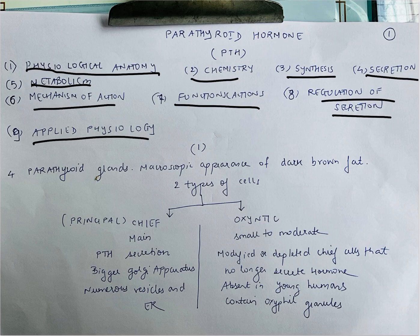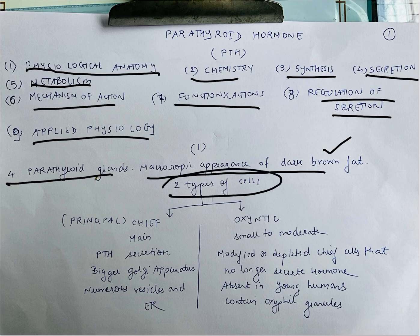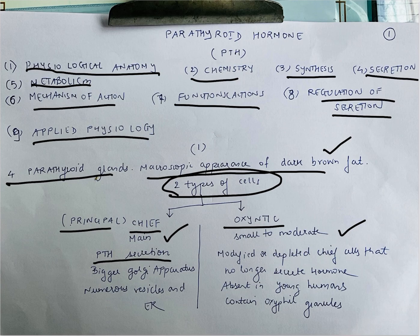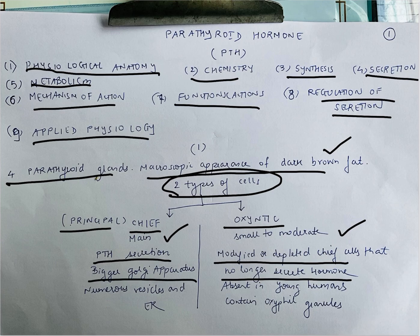Let's start with physiological anatomy. You have four parathyroid glands. The macroscopic appearance is of dark brown fat. It has two types of cells: principal or chief cells and auxinitic cells. The principal cells are the main cells and are responsible for PTH secretion. The auxinitic cells are modified or depleted cells that no longer secrete hormone. They are absent in young humans and contain oxyphyl granules. The principal cells have a bigger Golgi apparatus with numerous vesicles and endoplasmic reticulum.